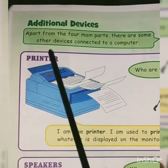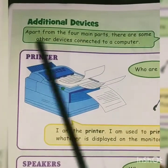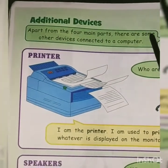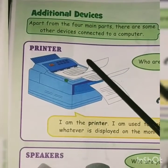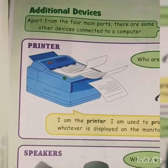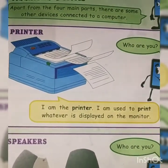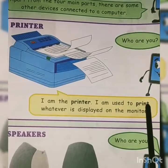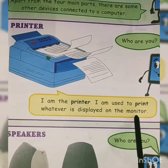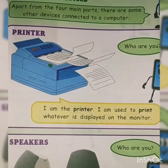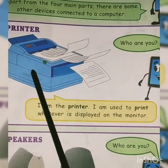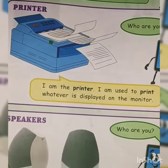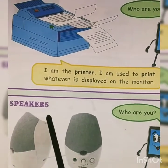Apart from the four main parts, there are some other devices connected to a computer, known as additional devices. We have two additional devices: printer and speaker. Someone asks, who are you, to the printer. The printer replies: I am a printer. I am used to print whatever is displayed on the monitor. The computer printer prints all the pages which are displayed on the monitor by giving a command.